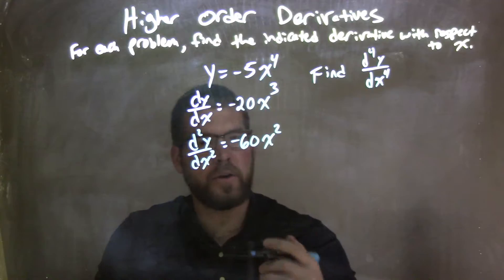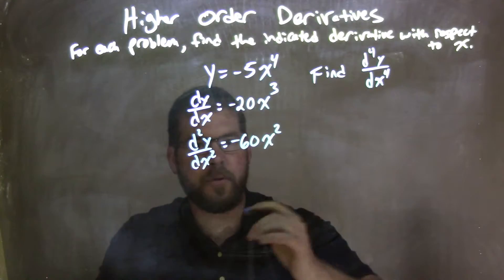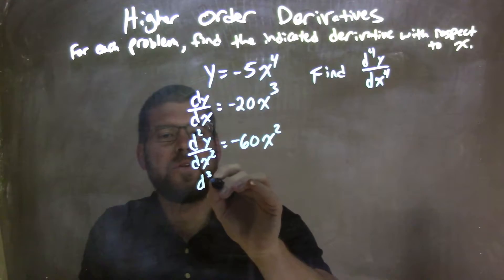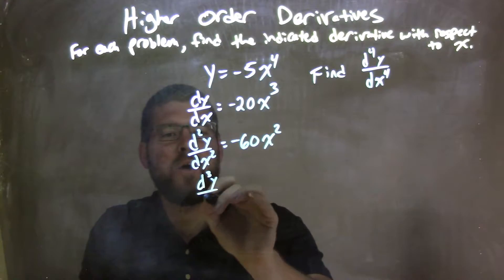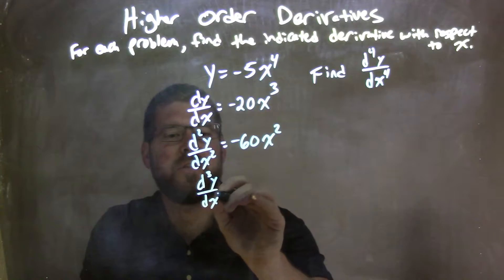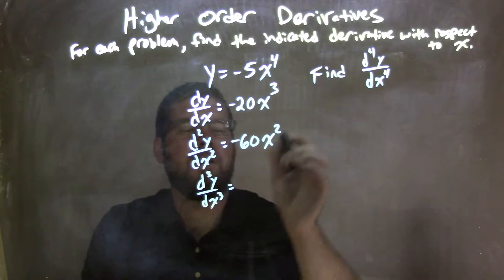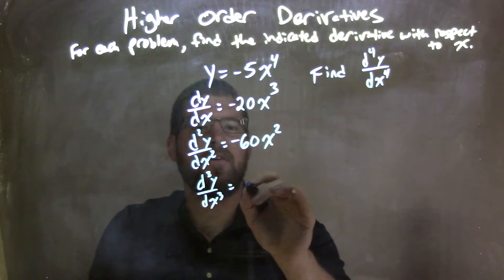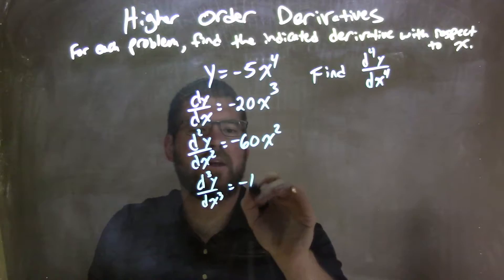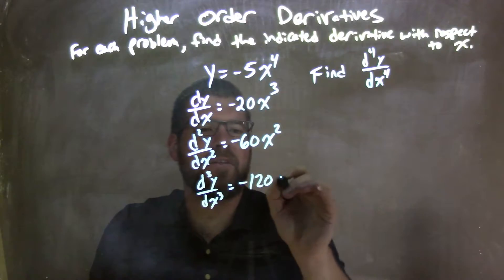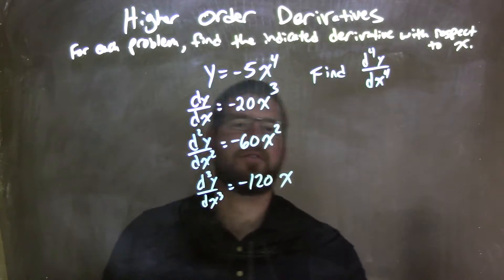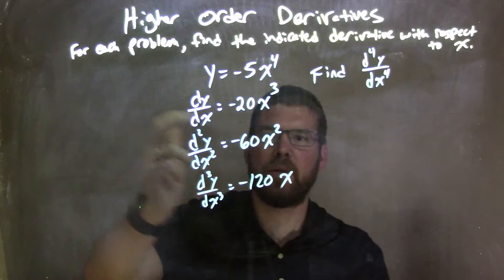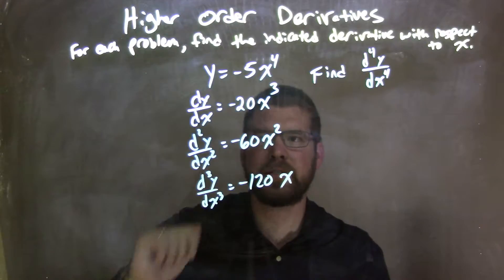I need to find the third derivative to get to the 4th. So the third derivative, d³y over dx to the 3rd: 2 times 60 is 120, so we have a negative 120 right there. Don't forget the negative. x to the 1st power — we'll leave it as x and subtract the exponent. So we apply the power rule a 3rd time.